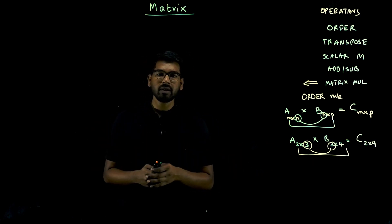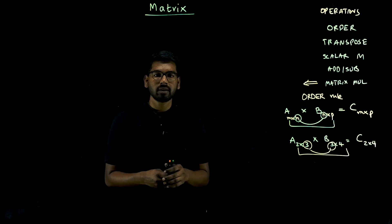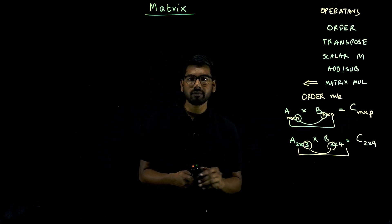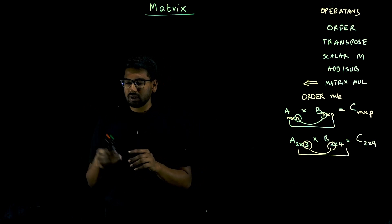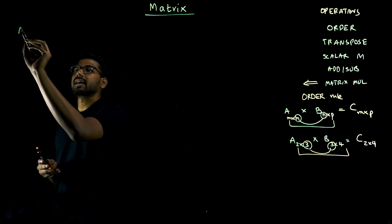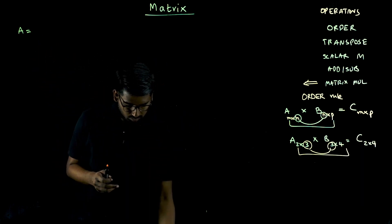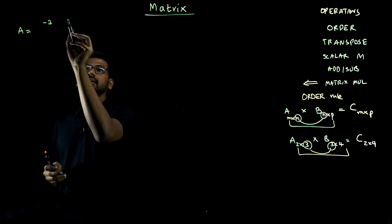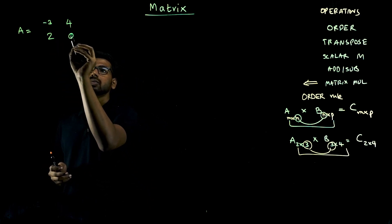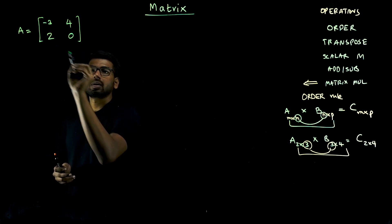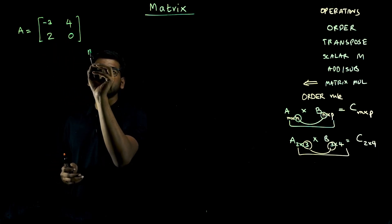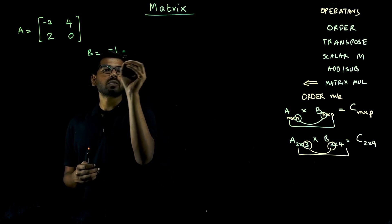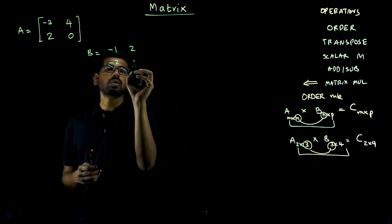Next, we will take one example and see how we multiply and what matrix we get. Suppose there is matrix A with elements minus 3, 4, 2, 0 and matrix B with elements minus 1, 2, minus 2, 1.